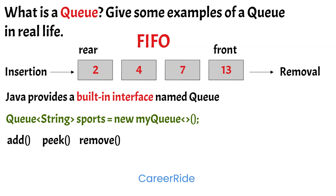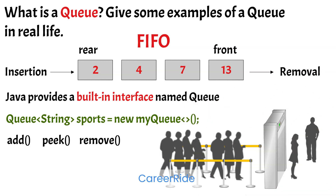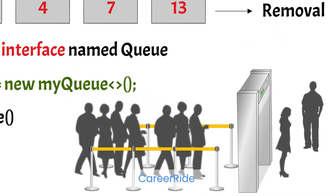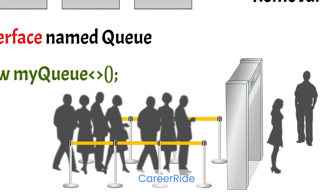Now let's look at some examples of a queue in real life. A queue of people waiting for their turn at the ATM machine, or people in a theatre waiting for their tickets, are some examples of a queue in real life.